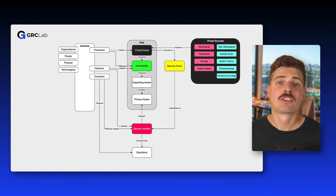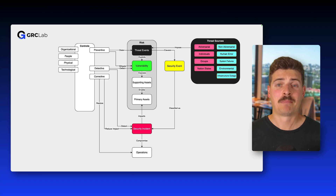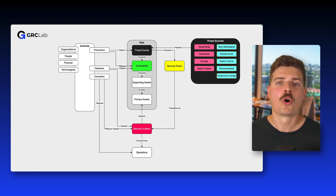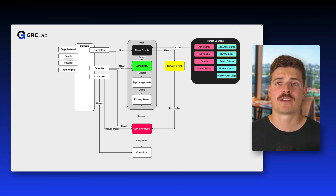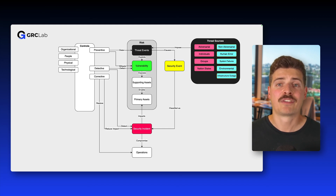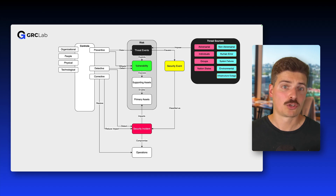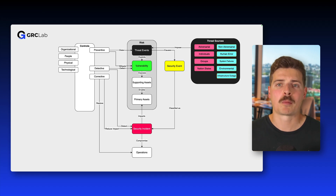A risk describes a potential future event — something that could happen. But once it does happen, it becomes a security event or an incident. At that point, the focus shifts to incident response and recovery: identifying the issue, taking corrective action, and restoring normal operations with minimal damage.